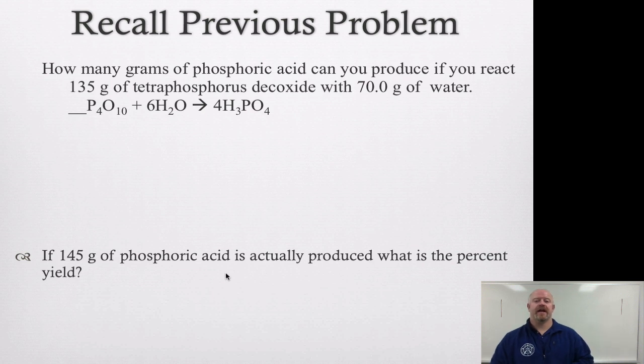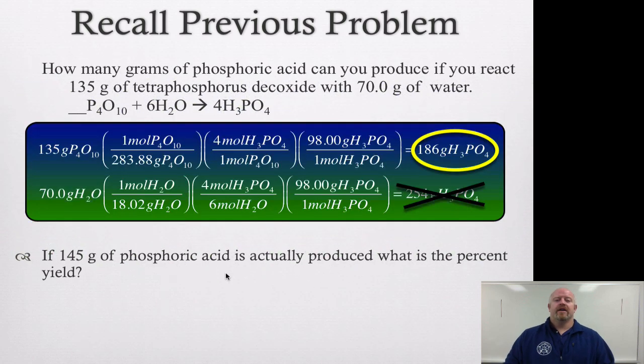So what we're gonna do is take a look at this previous problem that we did and then add the concept of percent yield into it. If you remember, we worked on this problem with limiting reactant and we said that if we react 135 grams of tetraphosphorus decoxide with 70 grams of water, we find out that our limiting reactant is actually the tetraphosphorus decoxide. So we identify this as our limiting reactant. The amount of phosphoric acid we can make is 186 grams. The excess reactant, the water, could make too much, so we cross that out. We said that wasn't gonna be our right answer.